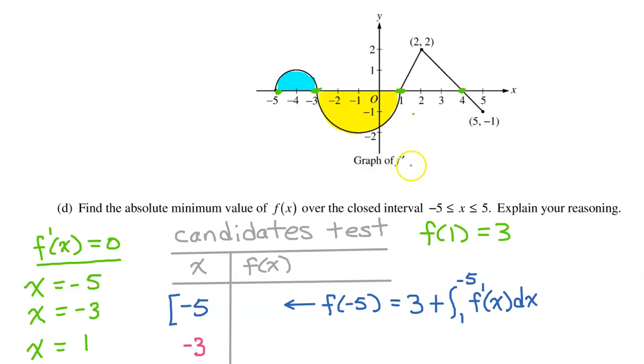This is the graph of f prime, so the integral of f prime from 1 to negative 5 will be the net signed area from 1 to negative 5. So let's calculate the area of the blue region and the yellow region. Both of these are semicircles. The blue region has a radius of 1. The area of a circle is pi r squared, so the area of a semicircle will be 1 half pi r squared. With a radius of 1, we have 1 half pi times 1 squared, which is just pi over 2.